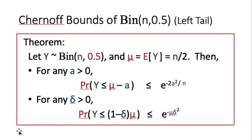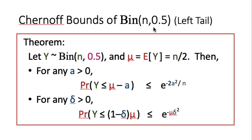Finally, for the left tail, since binomial(n, 0.5) is symmetric around its mean μ, we immediately obtain that the probability of y ≤ μ - a has the same bound as the probability of y ≥ μ + a. Similarly, for any δ, the probability of y ≤ (1-δ)μ equals the probability of y ≥ (1+δ)μ, giving the same bound. This completes the Chernoff bounds for both tails of the binomial random variable.